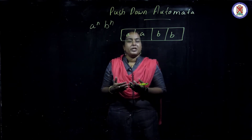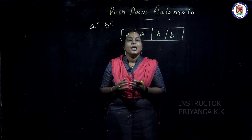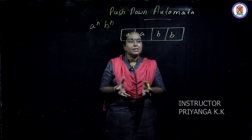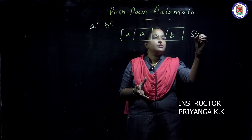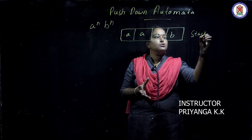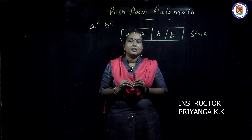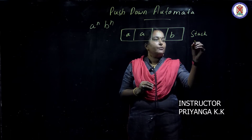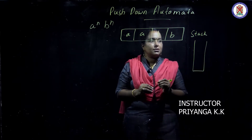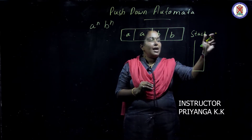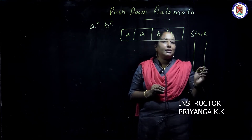Push Down Automata is mainly used for pattern recognition, and it has a limited memory. That limited memory is a stack. A stack is a LIFO data structure — Last In First Out.